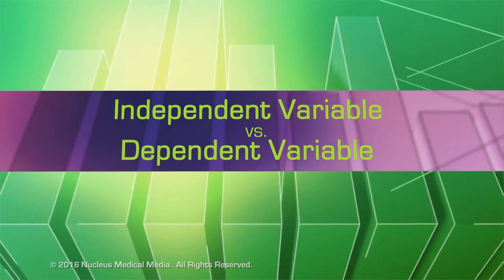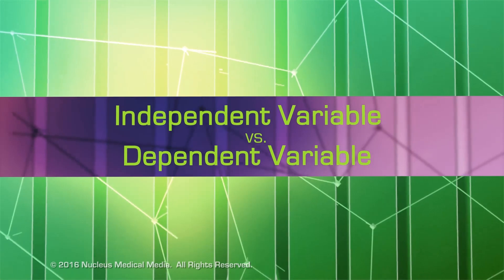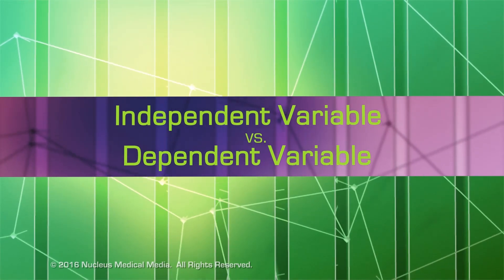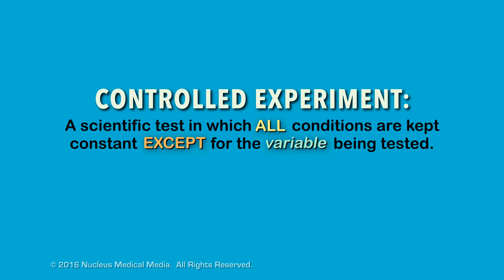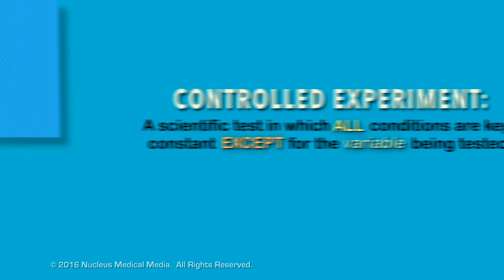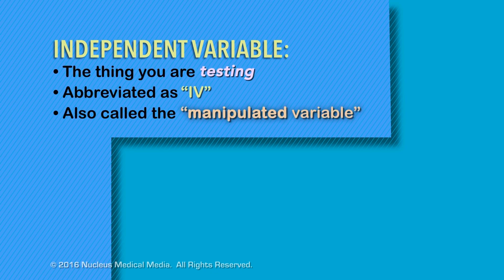Independent variable and dependent variable are important terms related to controlled experiments. A controlled experiment is a scientific test in which all conditions are kept constant except for the variable you're testing. The independent variable is the thing you're testing in an experiment. It's often abbreviated as IV and sometimes called the manipulated variable because you change or manipulate this variable.